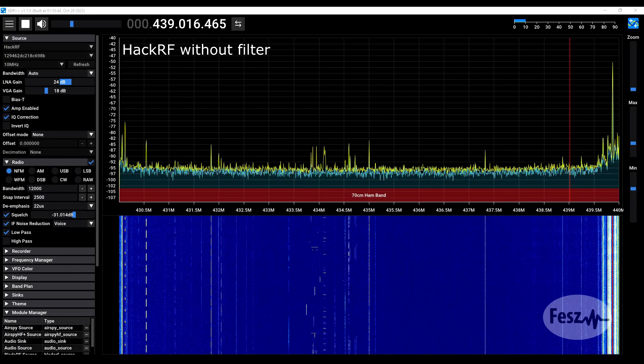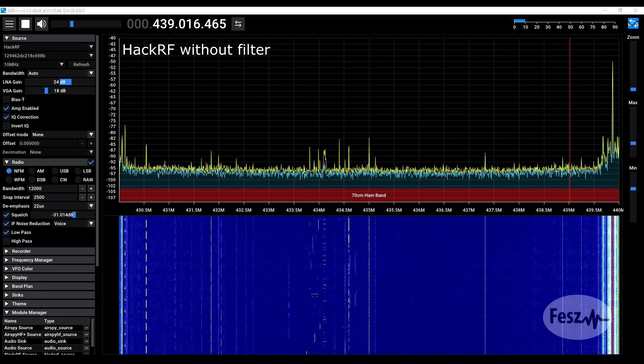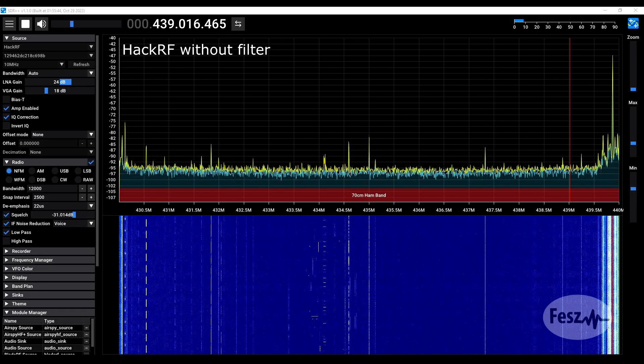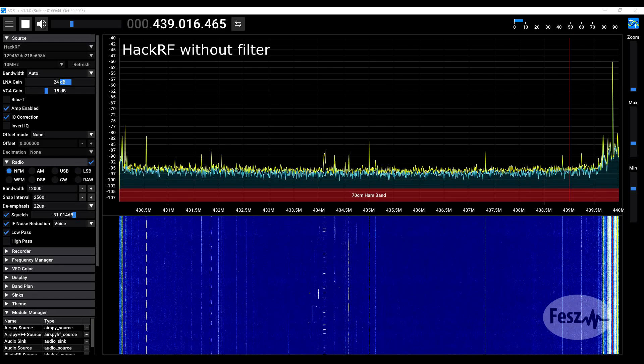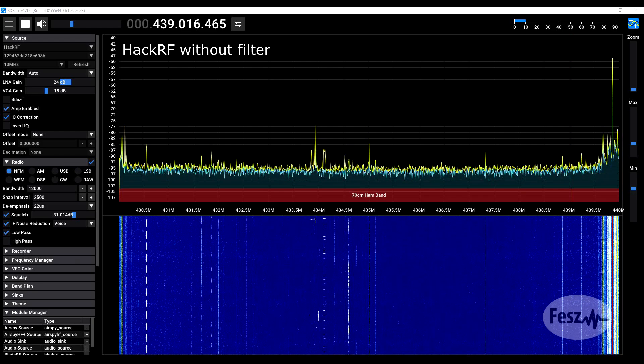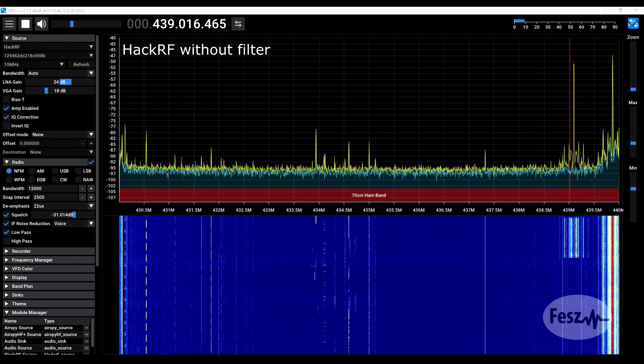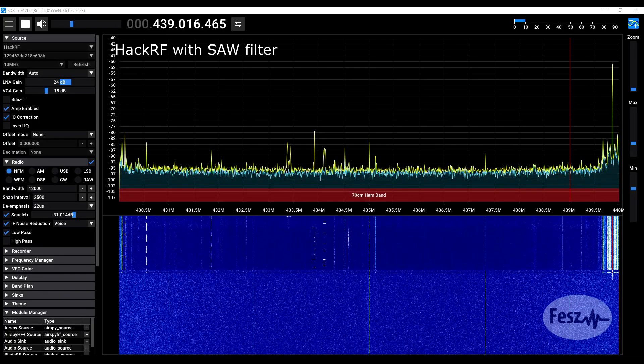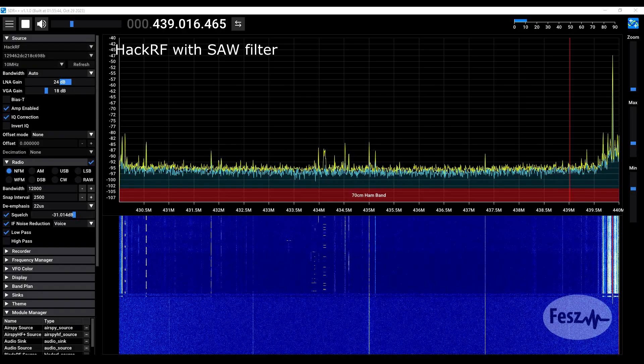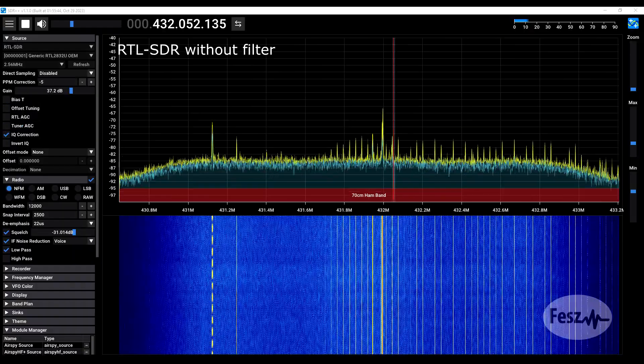In practice, I use this particular filter with my various SDRs, but when I try to record it to highlight just how good it is, it doesn't seem to make that clear of a difference. So right now, what you're seeing is my external ground plane antenna directly connected to a HackRF. And if I now mount in the filter, there's sort of a difference.